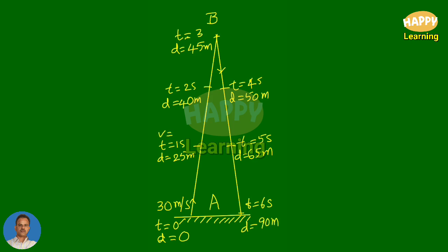Now let us note down the velocities. Velocity at time t equal to 1 second is 20 meters per second. Velocity at time t equal to 2 seconds is 10 meters per second. At the maximum height, when time t equal to 3, velocity is 0. At t equal to 4, velocity is 10 meters per second downwards. At t equal to 5 seconds, velocity is 20 meters per second downwards. Finally, when it reaches the ground at t equal to 6 seconds, velocity is 30 meters per second downwards.